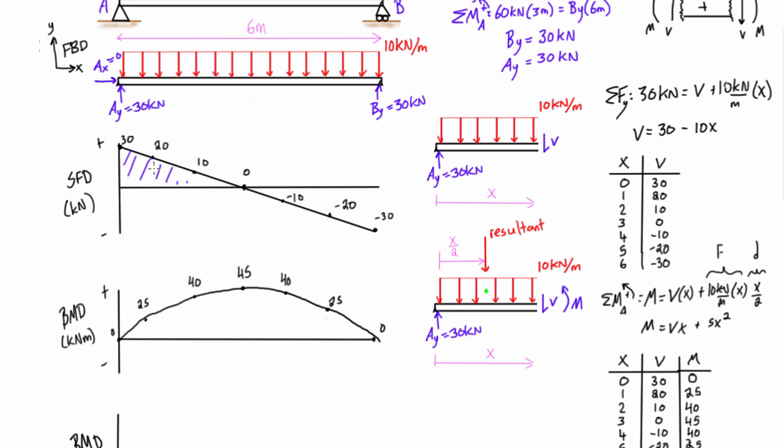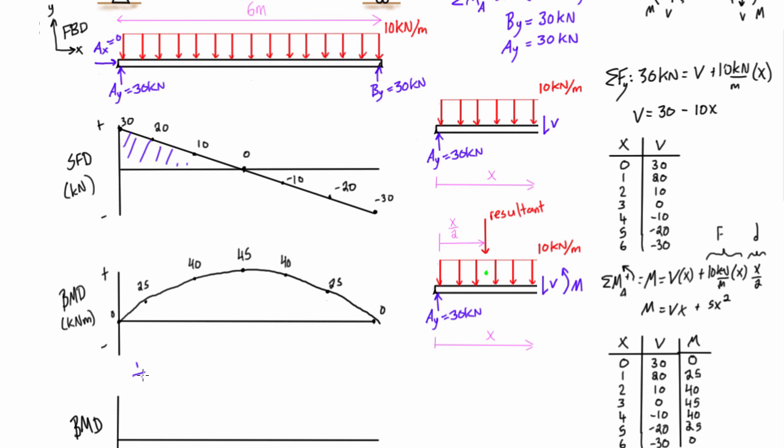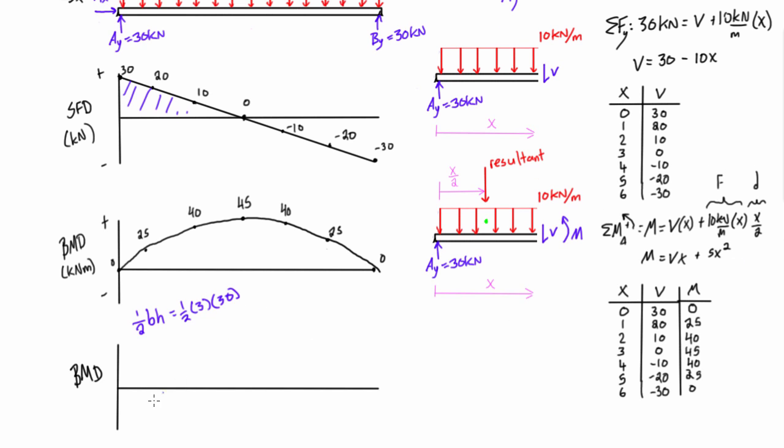...it is one half base times height. So it goes halfway across the span, so the base is three meters, the height is 30, so one half times 30 times 3 gives us 45. So we have one half base height is equal to one half times 3 times 30, so 90 divided by 2 that's 45. So that gives us an increase of 45 units.